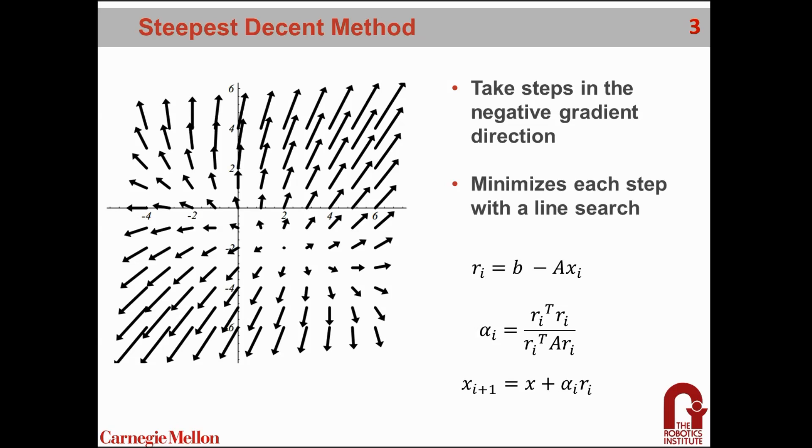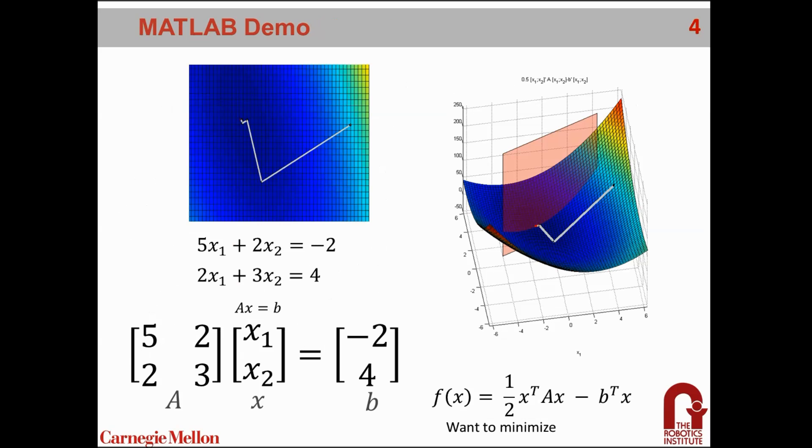All we do to update our new estimation of the solution x is move along the direction of steepest descent r by amount alpha. Alpha is a way of optimizing our movement along this direction in a line search.